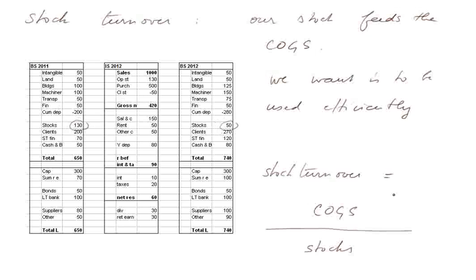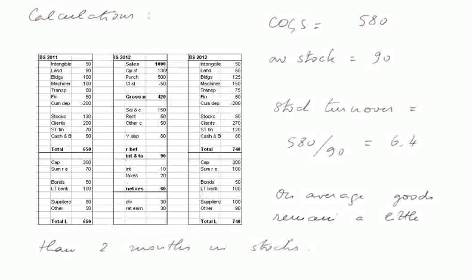So the stock turnover is defined as the cogs, which are computed from these three figures, you will remember, cogs divided by stocks. And we want this to be high because we want the stock somehow to turn fast. Here are the calculations. The cogs here are 130 plus 500 minus 50, that's 580. And the average stock here is 130 plus 50 divided by 2, that's 90. So here the stock turnover is 580 divided by 90, that's 6.4.